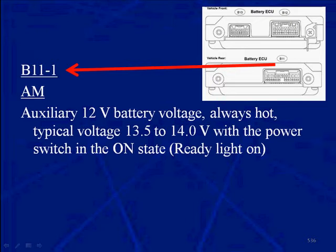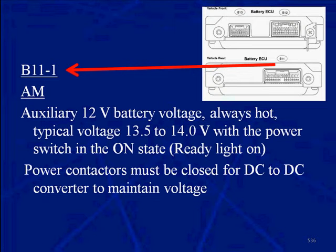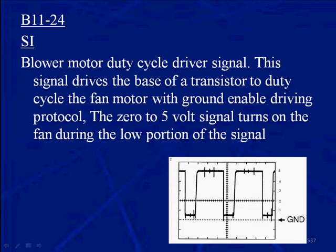The AM circuit is the auxiliary 12-volt battery voltage, always hot, typically at charging system or battery voltage — 13.5 to 14 volts — with the power switch on and the ready light on. Power contactors must be closed for the DC-to-DC converter to maintain its voltage. At B1124, we have the SI signal, the blower motor duty cycle driver signal, and we can use a lab scope to look at this duty cycle.